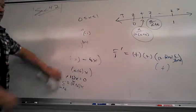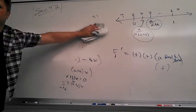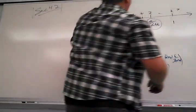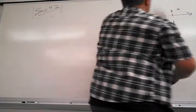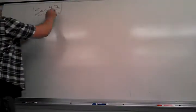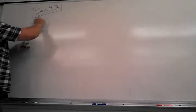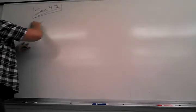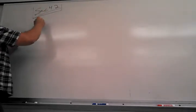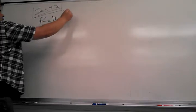Is there anything else before we get into 4.2? So 4.2 is a weird little section, just out of nowhere, but it's used a lot in many different parts of math. So we start with Rolle's theorem.